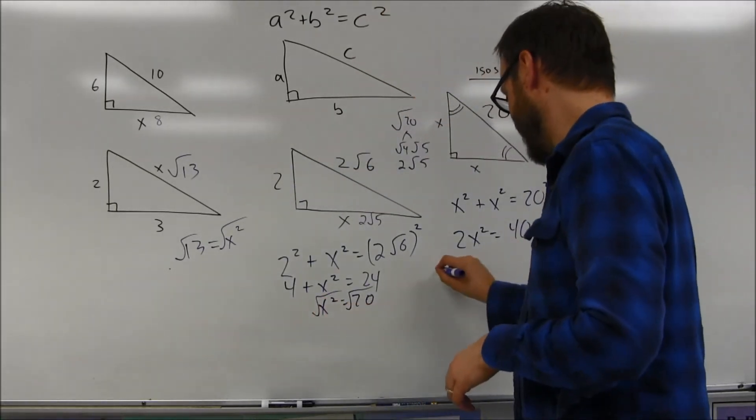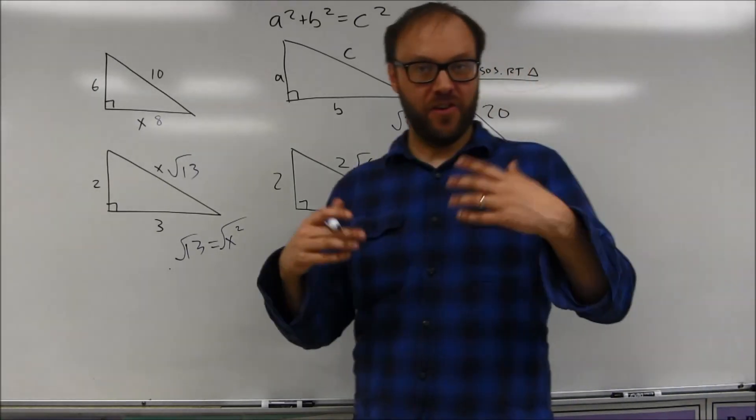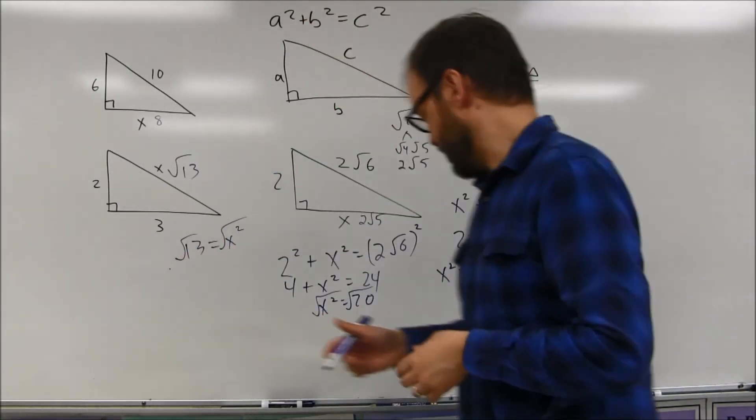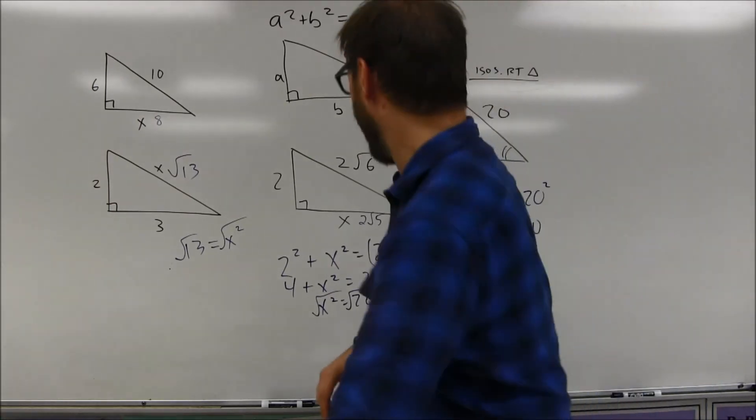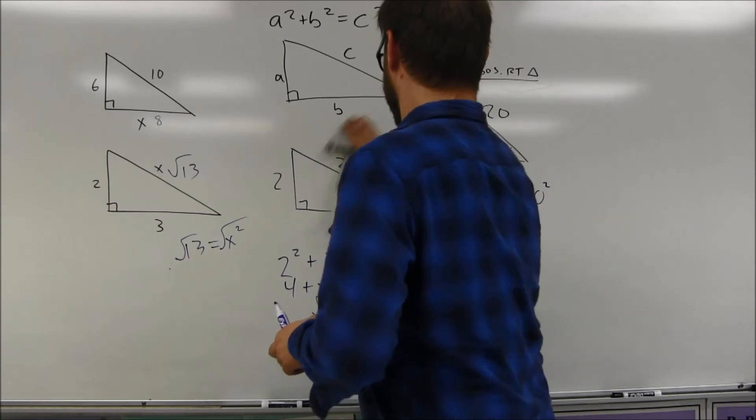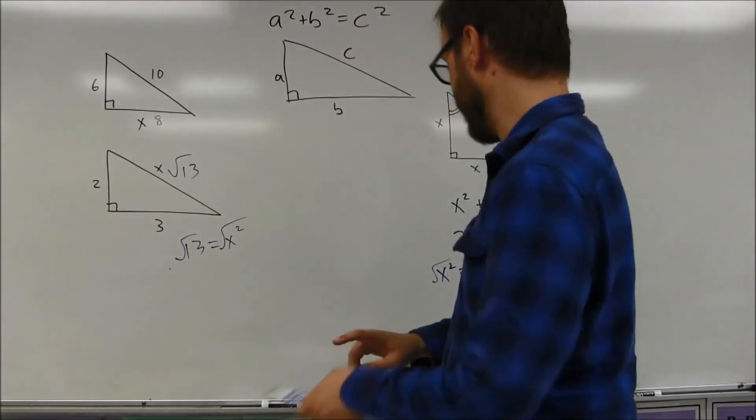Divide both sides by 2, you get x squared is equal to 200, and then you can break down the square root of 200. Square root of both sides. The square root of 200, we are going to have to do a little bit of work here.